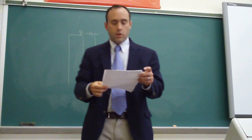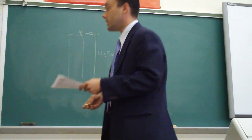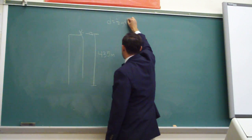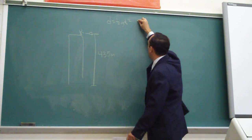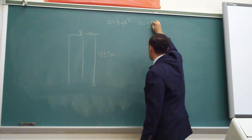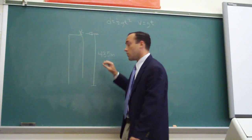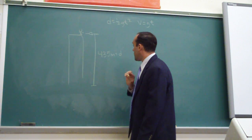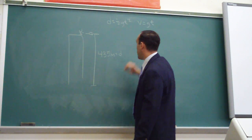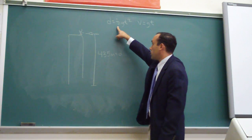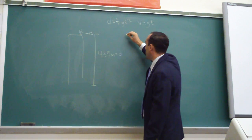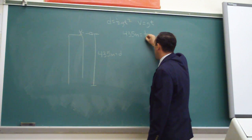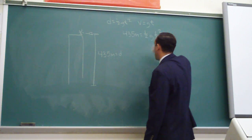Because this is an acceleration problem, we have two equations that deal with this. The first one is d = ½gt², and the second one is v = gt. The one piece of information given is the distance, d. So in choosing equations based on the variable we have, the equation we can use first is: 435 meters = ½gt².